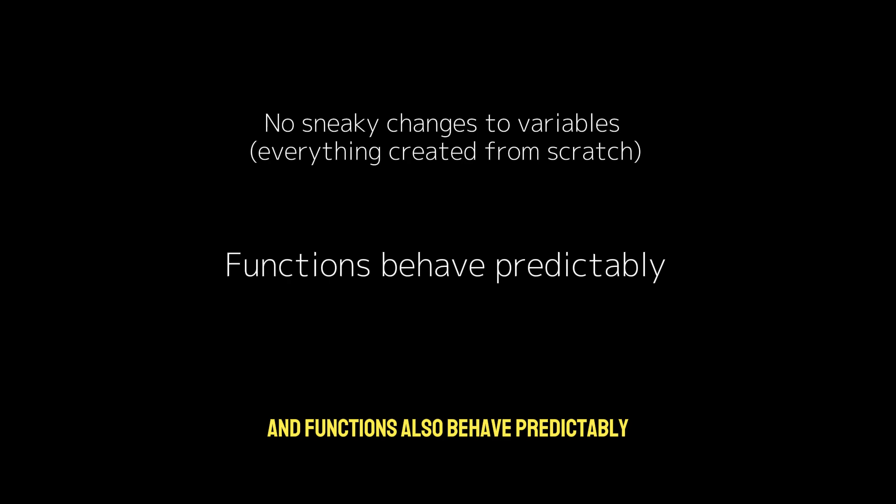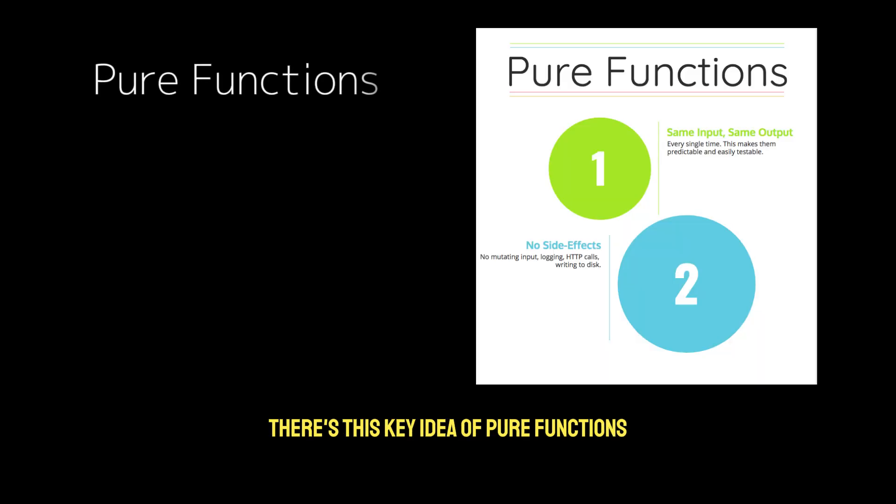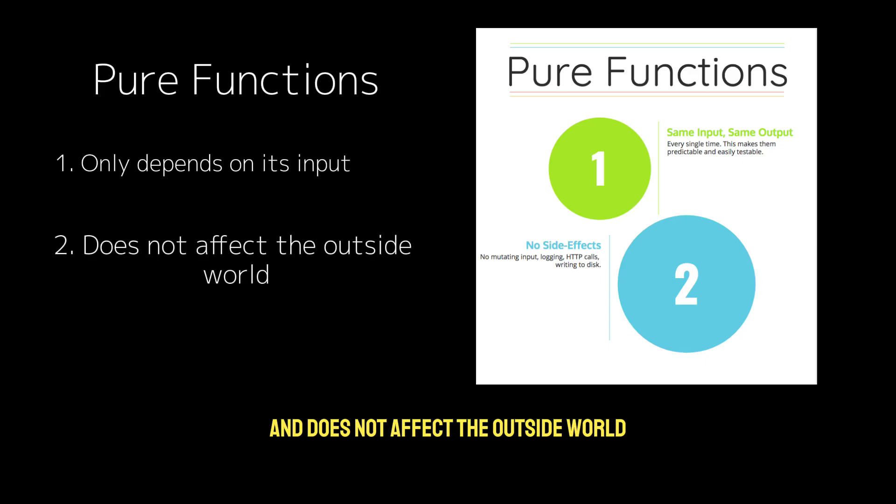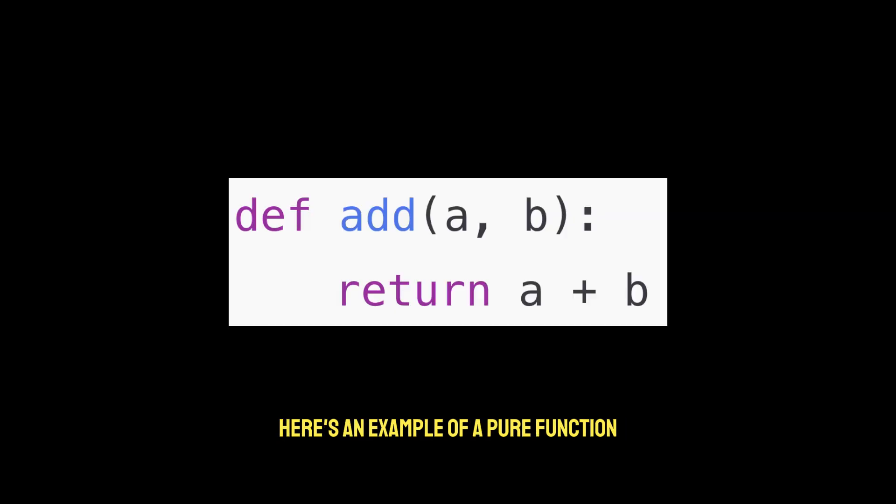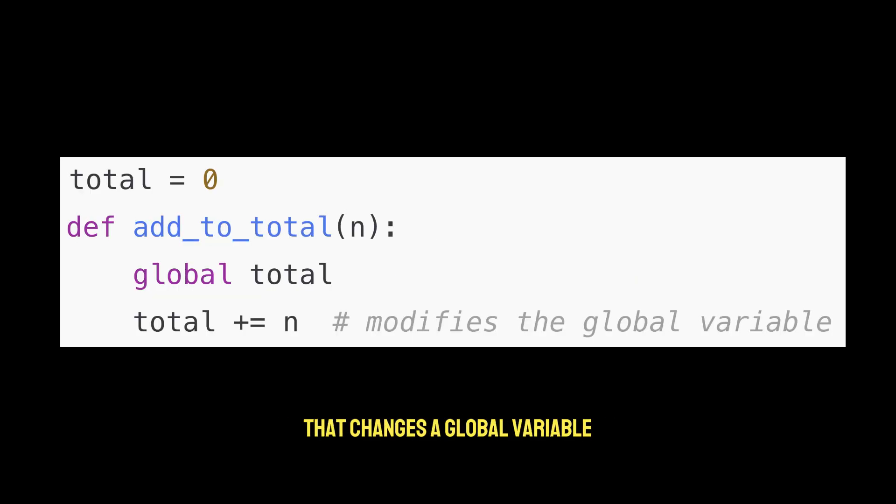There's no sneaky changes to variables because everything is created from scratch. And functions also behave predictably. There's this key idea of pure functions. It's a function that only depends on its input and does not affect the outside world. Here's an example of a pure function. Contrast this with a function that changes a global variable and is thus not a pure function. Notice that the global total variable is being modified within the function.